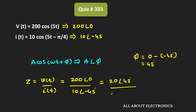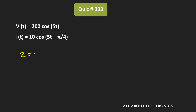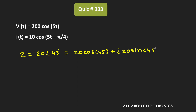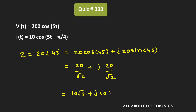Now, this impedance is in the polar form, that is in the form R∠θ. So let's convert this polar form into the rectangular form, or in other words, into the A plus jB form. We can write this impedance as Z = 20∠45° = 20cos(45°) + j times 20sin(45°), which is equal to 20/√2 + j times 20/√2, or equivalently 10√2 + j times 10√2.